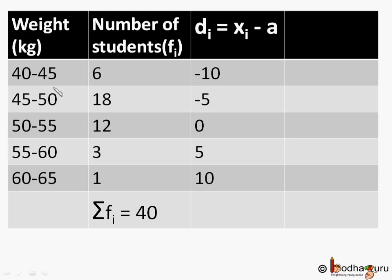40 to 45, class size is 5. 45 to 50, class size is 5 and so on. So all these deviations are divisible by class size. So we can divide di by class size to make it even smaller.